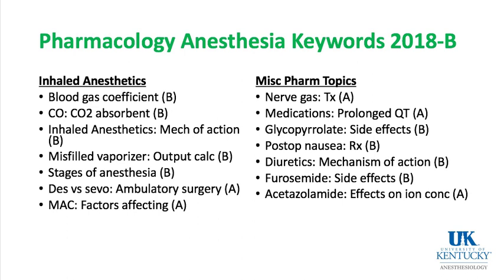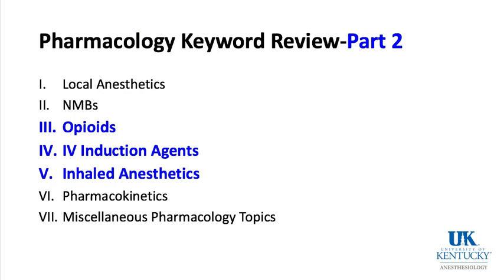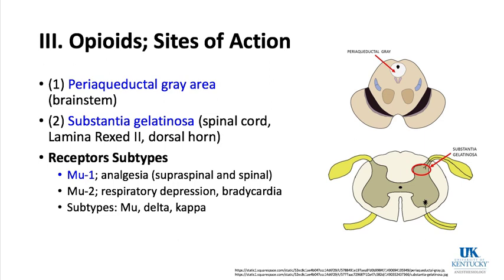Moving into part two of this three-part pharmacology series focusing on opioids, IV induction agents, and inhaled agents. Where do opioids act? The periaqueductal gray area is part of the brainstem. The substantia gelatinosa is in the spinal cord — lamina rexed 2 of the dorsal horn — where opioids work. There are receptor subtypes including mu1, whose activation results in analgesia via supraspinal and spinal effects.